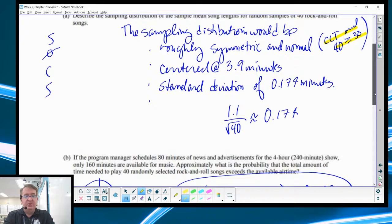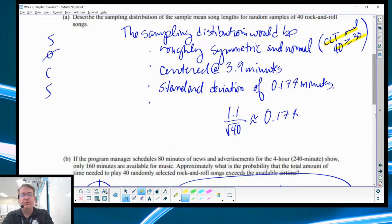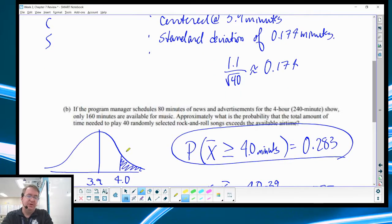So, then they go on and say, if the program manager schedules 80 minutes of news and advertisements in a four-hour block, which is 240 minutes, that means you only have 160 minutes left for music. Approximately, what is the probability that the total amount of time to play 40 randomly selected rock and roll songs exceeds the time available? Work it backwards. My average song is 3.9 minutes. How much is the average time that you have per song in 160 minutes for 40 songs? That would be 160 divided by 40. So, you'd end up with this. So you would say, okay, 3.9 is normal. I've got my 4.0 over here. I want to go, what's the chances of being larger than that?